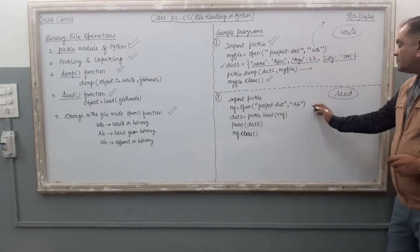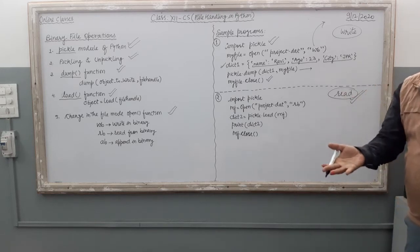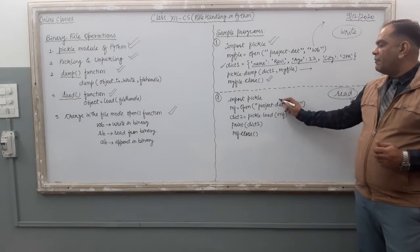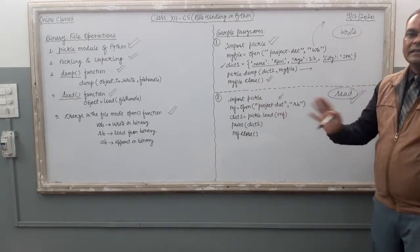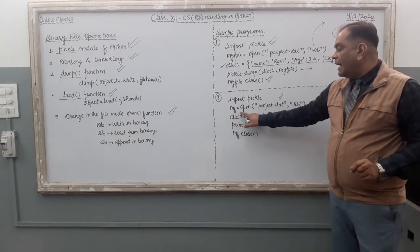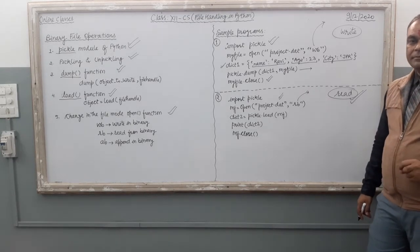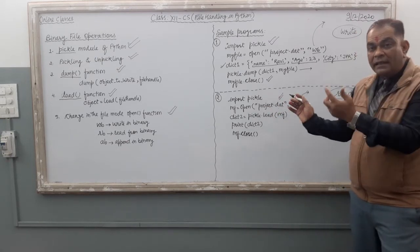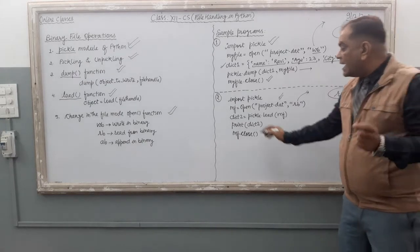Sample program two is related with read operations — data is already there in the file and you want to read it using your Python program and display the file data. The project.dat file is already created. The very first command is import pickle, which is common for each binary file operation. Then: mf = open('project.dat', 'rb') — the mode 'rb' means read from binary. The file is opened and the file handle mf is connected to it.